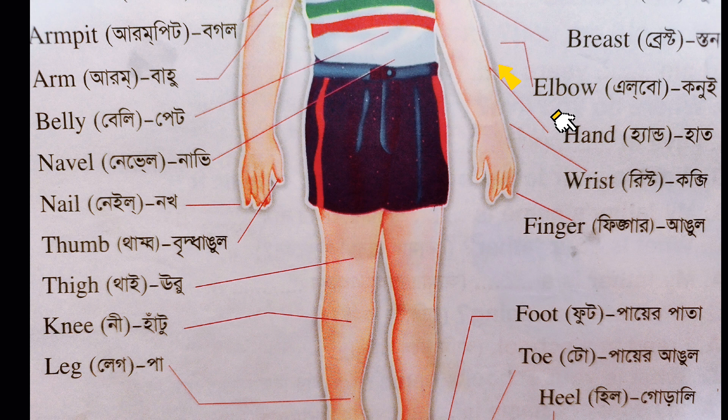Wrist — the Bangla meaning of Wrist is 'Kupchi'. Finger — the Bangla meaning of Finger is 'Angul'. Nail — the Bangla meaning of Nail is 'Knock'. Thumb — the Bangla meaning of Thumb is 'Brittangle'.